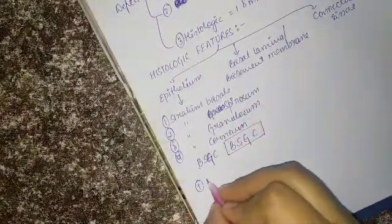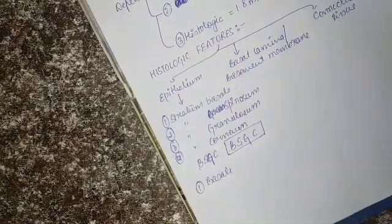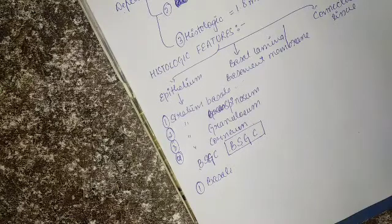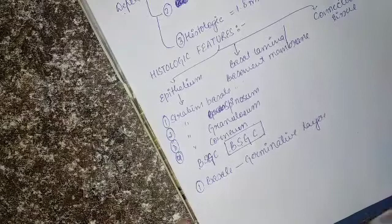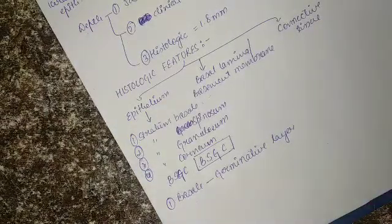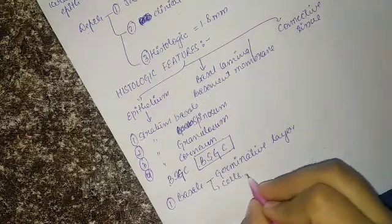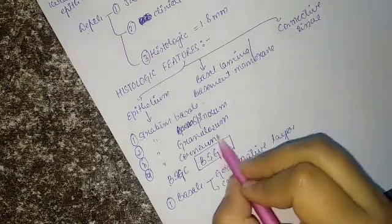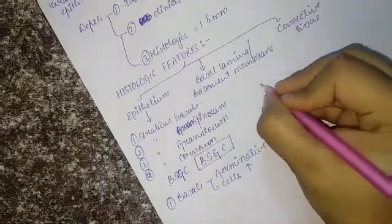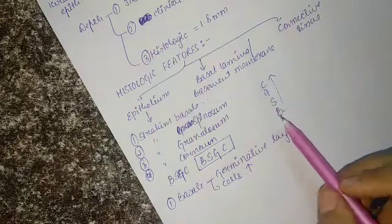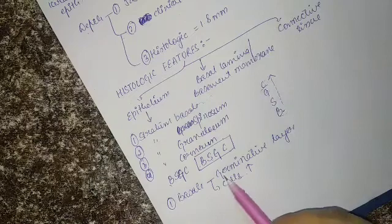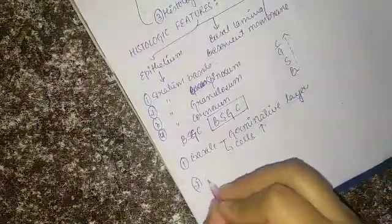Starting with the stratum basale: it is also called the germinative layer. It is called so because the cells present in this layer move upwards — from basale to spinosum, then granulosum, and finally corneum — differentiating as they go. That is why it is called the germinative layer.